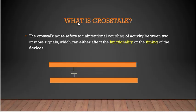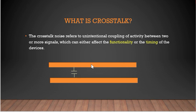So what is crosstalk? Crosstalk refers to the unintentional coupling of activity between two or more signals which can either affect the functionality or the timing of the device. So let's say there are two or more metal wires running in parallel to each other — it is possible that there is a coupling capacitance between them. Because of this coupling capacitance, if any switching activity is happening on one particular signal then it might affect the other signal as well. So this unintentional coupling is called crosstalk.